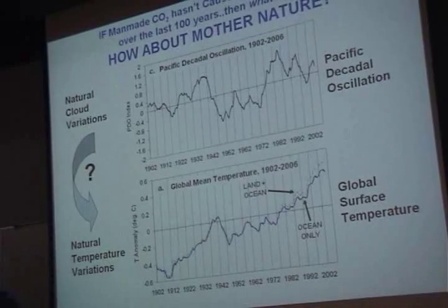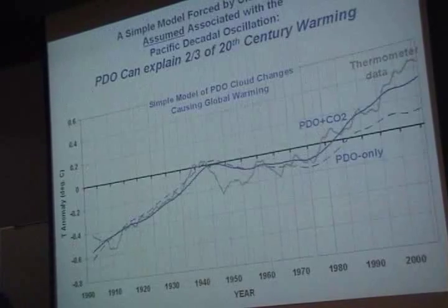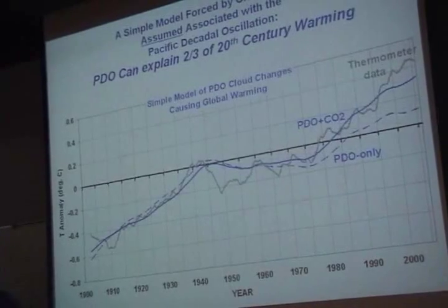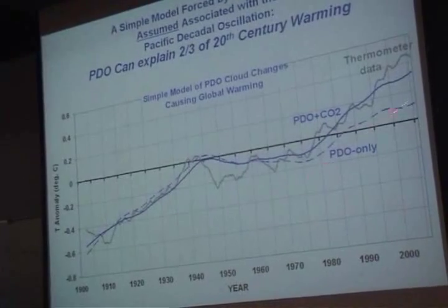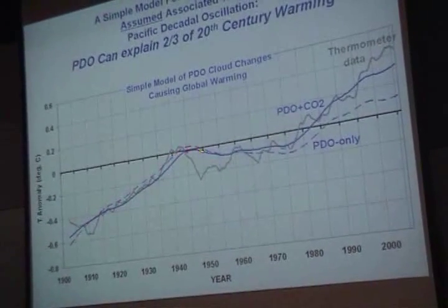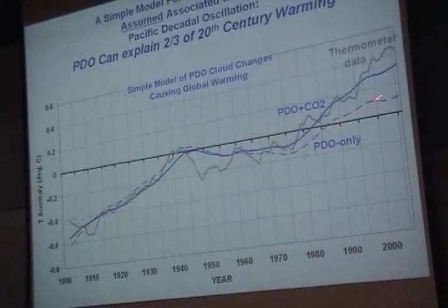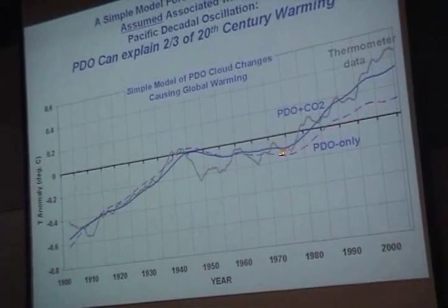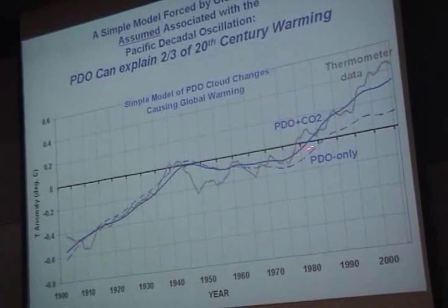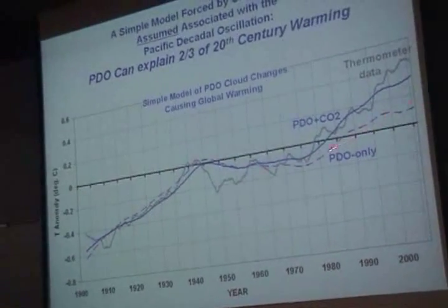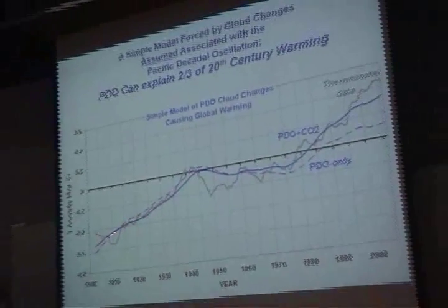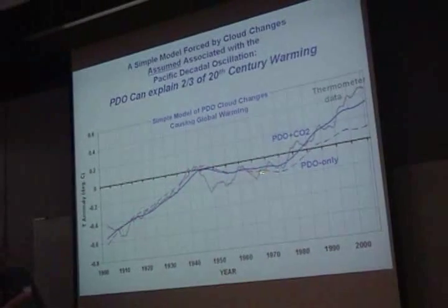So you run a model, and sure enough, it turns out that the PDO — that dashed line there coming out of the model — that's the temperature change I get from just putting the PDO-modulated clouds into the model.